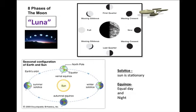Seasonal changes on Earth are due to the tilt of the Earth. A solstice occurs as the sun is stationary, and an equinox occurs when there is equal day and night.